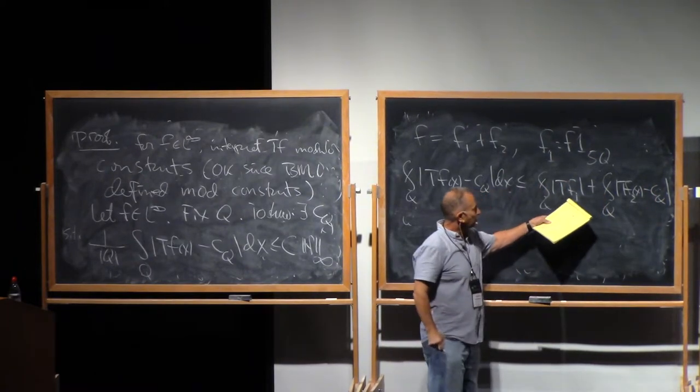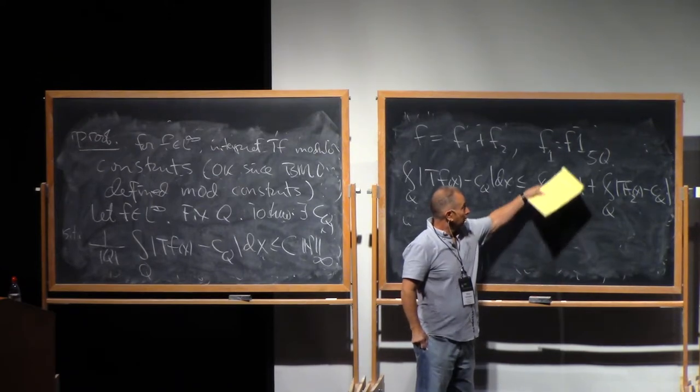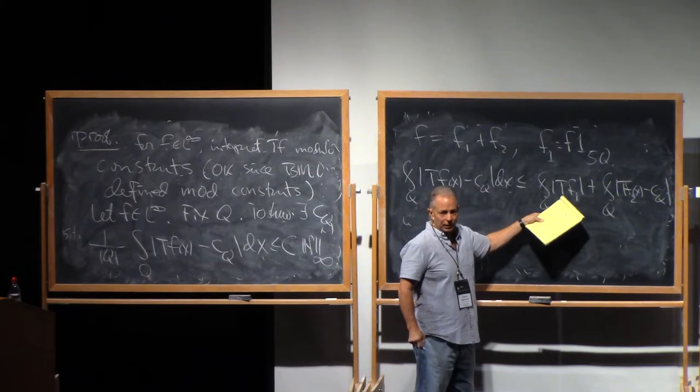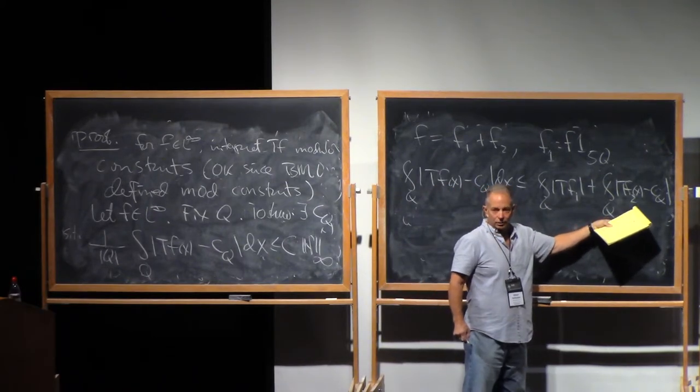Now, this is perfectly well-defined because T is a bounded operator in L2 and once we've truncated this to have compact support, F1 is in L2. So this makes sense. This will need to make sense of.